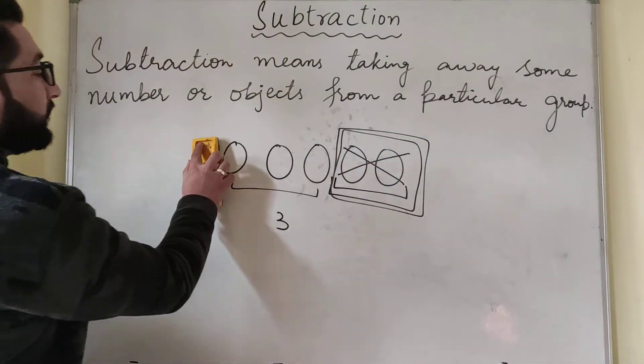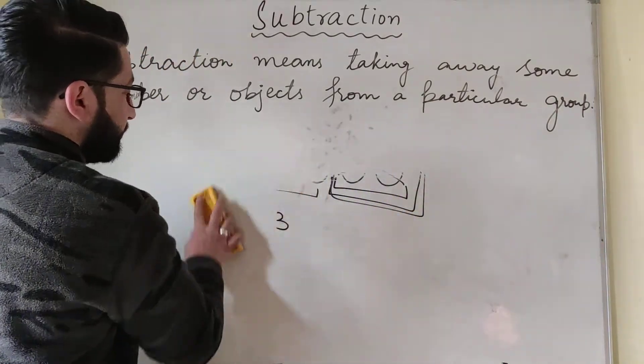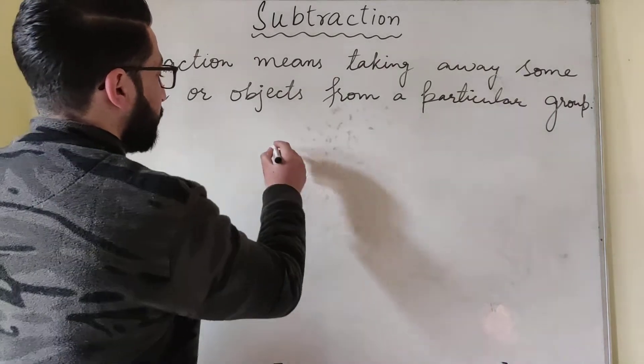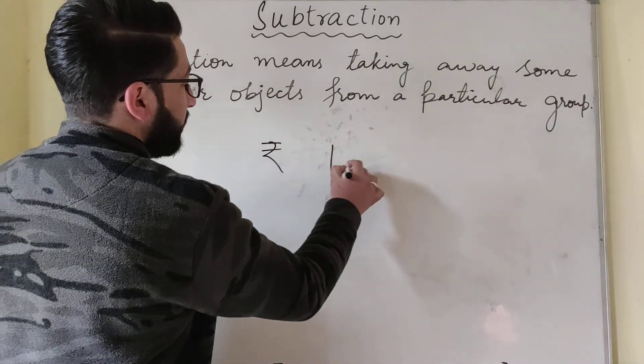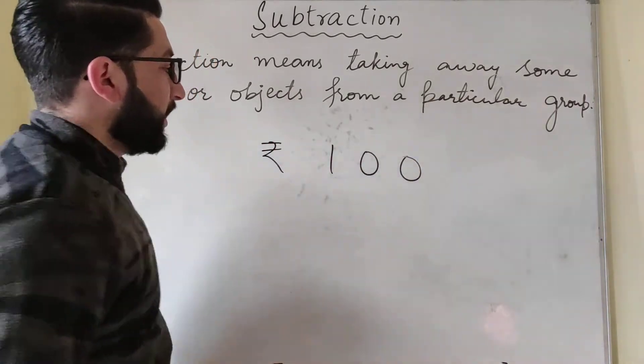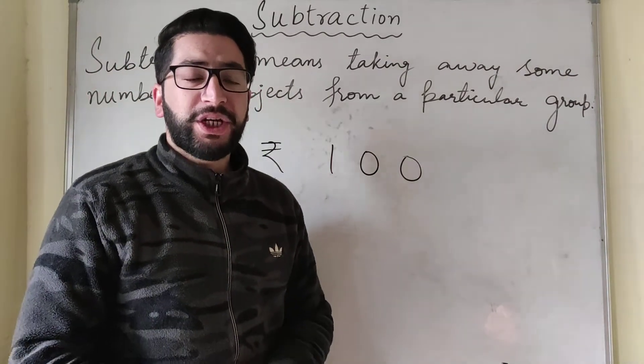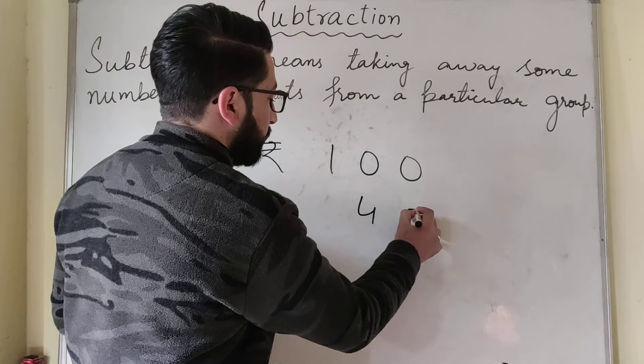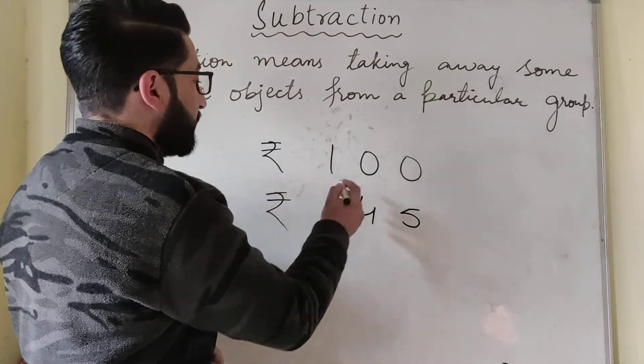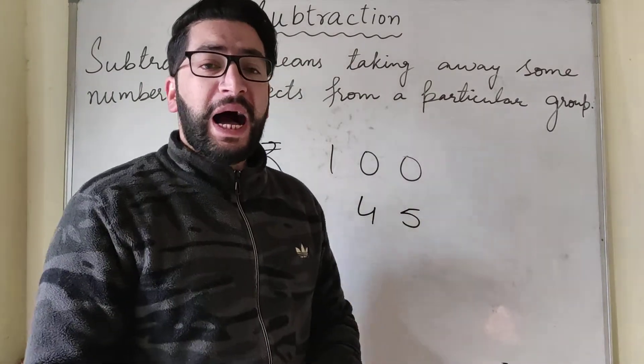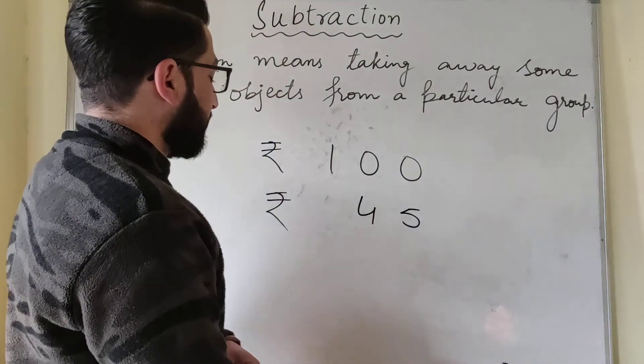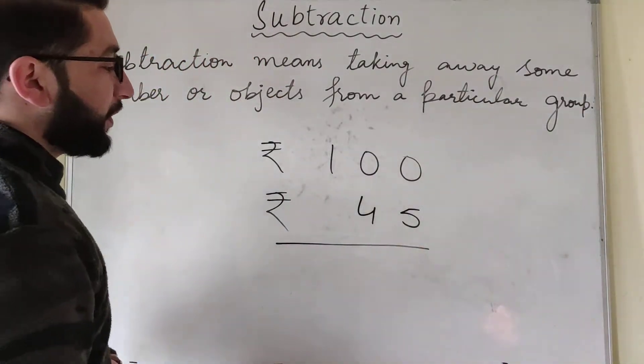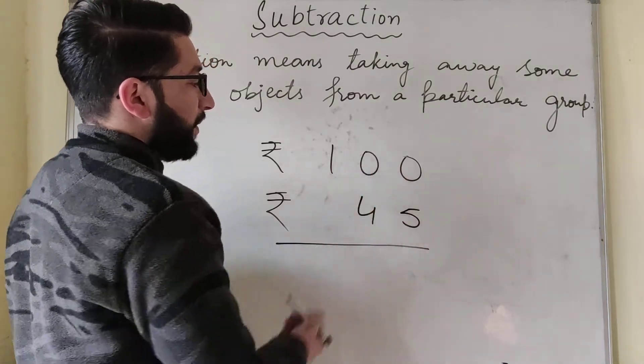Now if we have numbers, suppose same Aakib went to the market and purchased a bread of rupees 45. So if he gives 100 rupees to the shopkeeper, how much money will Aakib receive back? He will subtract 45 from 100.